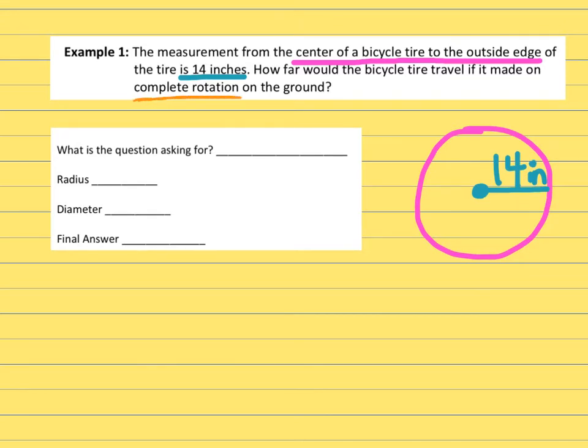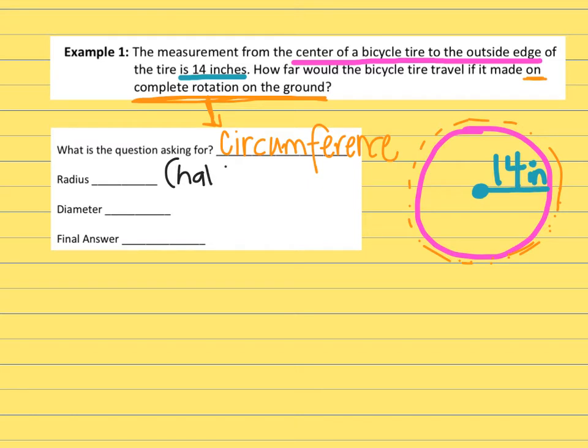Then the rest of the problem says how far would the bicycle tire travel if it made one complete rotation on the ground. So here's where I'm starting to get those clue words. It's going to make one complete rotation on the ground. The part of the bicycle tire that's touching the ground, that would be the rubber part of the tire. So a rotation, that is a clue word that you are trying to find circumference. The radius is only halfway across the circle and diameter is all the way. Just to review that. And this one you can tell is going only halfway across right from the center to the outside edge. So then that tells me that the radius is 14.